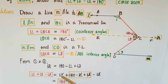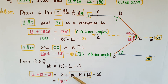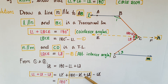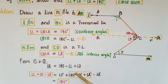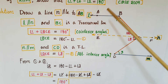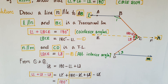Now find angle 1 + angle 2 − angle 3. Substituting the value of angle 2: angle 1 + (180 − angle 1 + angle 3) − angle 3. The angle 1 terms cancel and the angle 3 terms cancel, leaving 180 degrees. Therefore, angle 1 + angle 2 − angle 3 = 180 degrees.